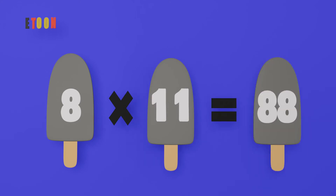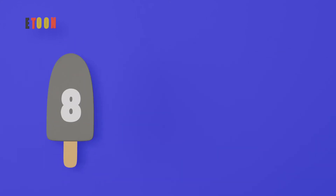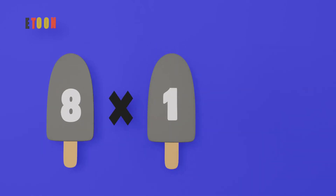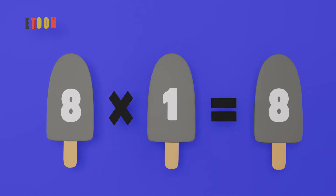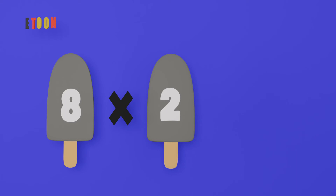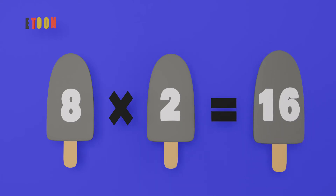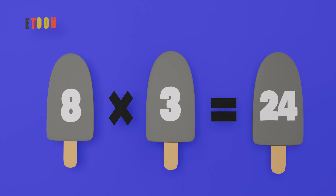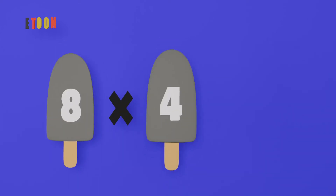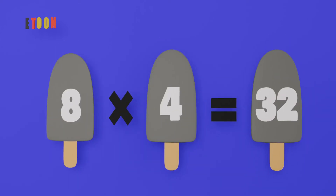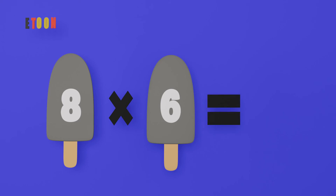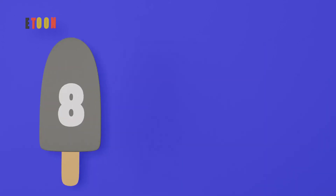8 times 11 is 88, 8 times 12 is 96. 8 times 1 is 8, 8 times 2 is 16, 8 times 3 is 24, 8 times 4 is 32, 8 times 5 is 40, 8 times 6 is 48.